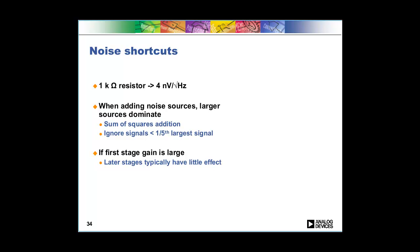Let's talk about a couple of noise shortcuts. The first that we talked about earlier was that this one kilohm resistor equals four nanovolts root hertz, so you can quickly figure out what the noise of different resistors are. Another shortcut that'll save you some time is remember that when you add noise sources, the larger sources quickly dominate.